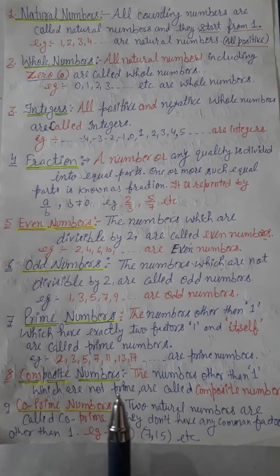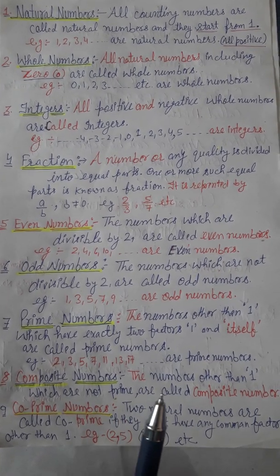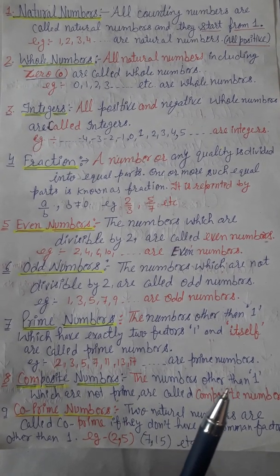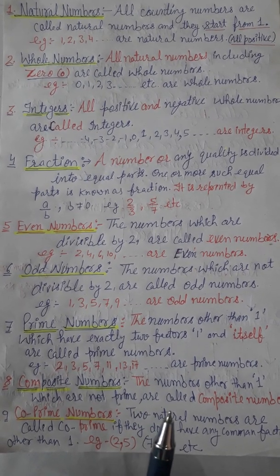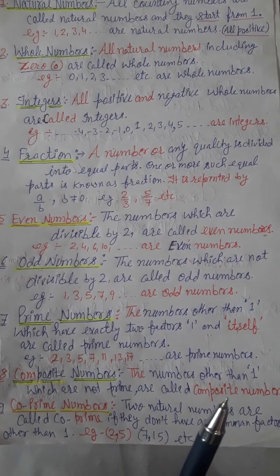Composite numbers: Numbers other than one which are not prime are called composite numbers. This means we can factorize them.